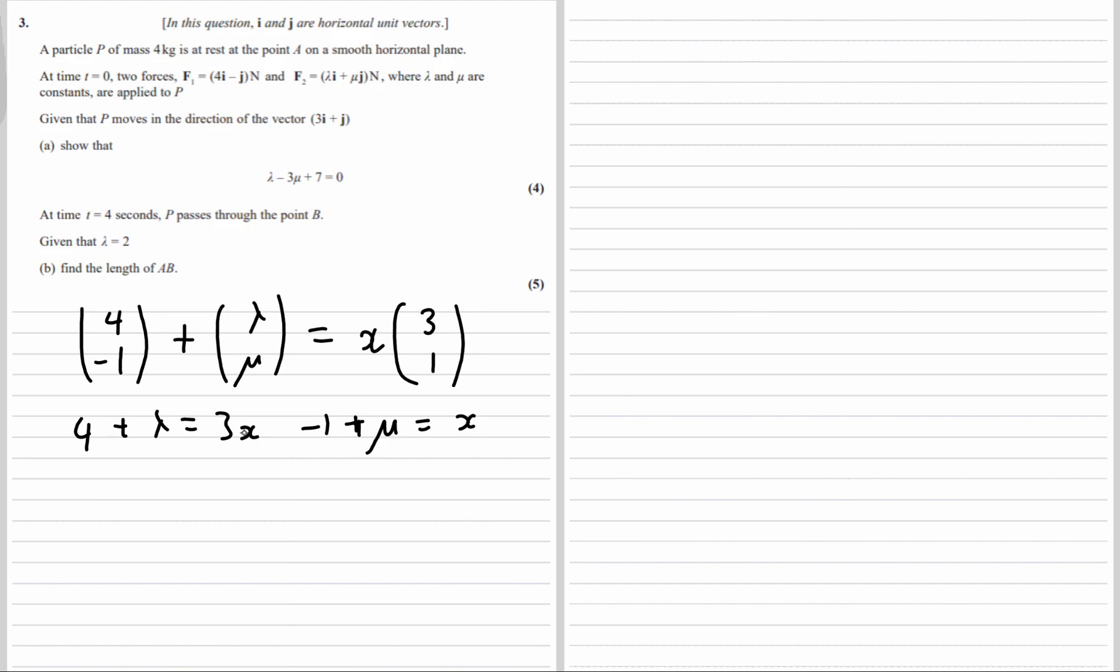Now I just want to eliminate x from this, so I'll divide my 4 plus lambda by 3, so they're both equal to x. And now I have 4 plus lambda over 3 equals negative 1 plus mu, because they're both equal to x, that means they're equal to each other. Then I'll multiply by 3.